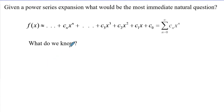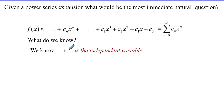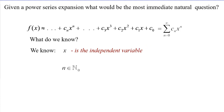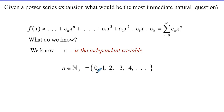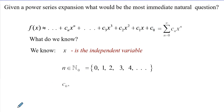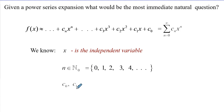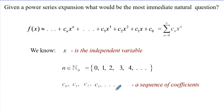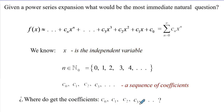Given a power series expansion, what would be the most natural question to ask? We know that x is an independent variable, n is a whole number running from 0 to infinity, and we have a sequence of coefficients c_0, c_1, and so on. When n equals 0, that corresponds to coefficient c_0. When n equals 1, we have c_1, generating a sequence of coefficients which, if known, would explicitly give the power series expansion. So the question is: where do we get these coefficients, the c_n's?